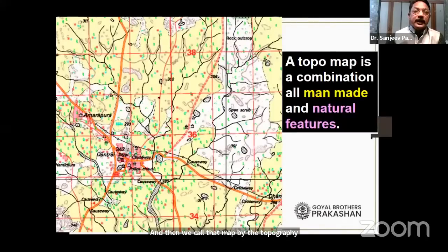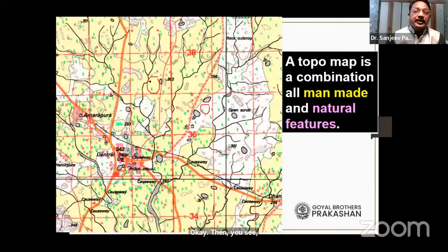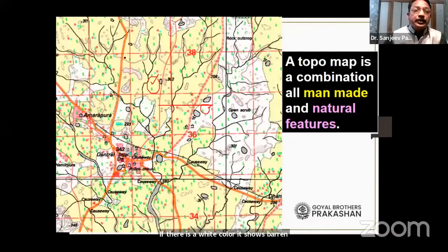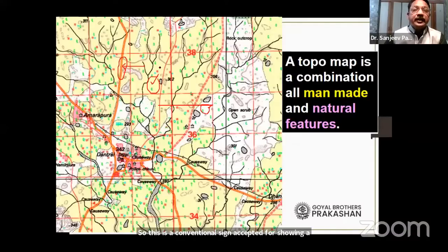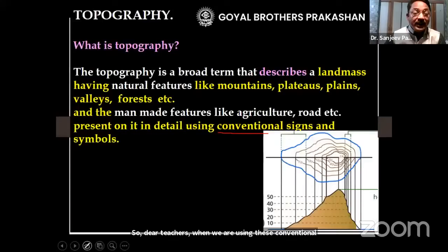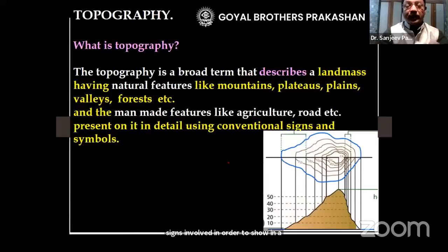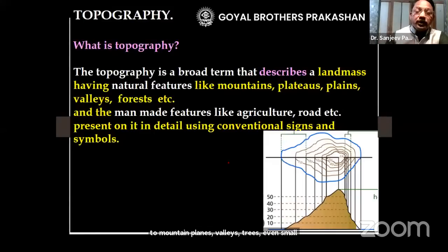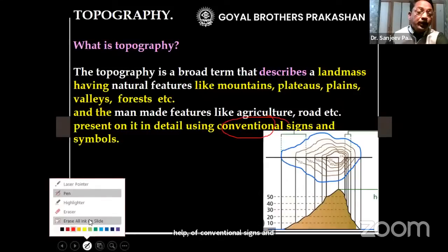For example, yellow color conventionally shows agriculture, white color shows barren land, and an orange color road indicates a metal road such as a state highway. When we use these conventional signs and symbols to show in detail every feature — from roads to mountains, plains, valleys, trees, even a small temple — everything shown in detail using conventional signs and symbols is termed a topographic map.